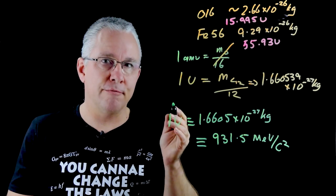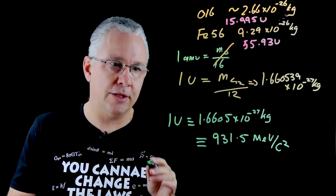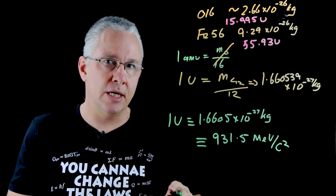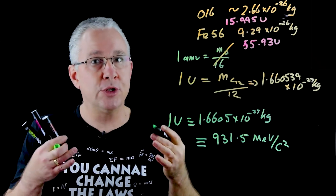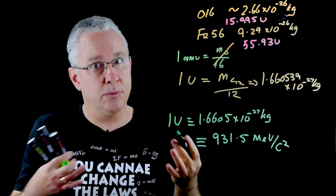and that is equal to 931.5 to four significant digits mega electron volts per c squared. So there are three units of mass, one being the SI unit and two non-SI units that are used interchangeably when we're doing either particle physics or nuclear physics or both.